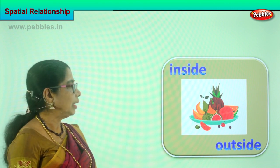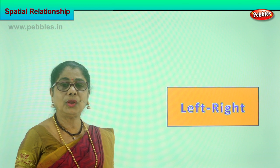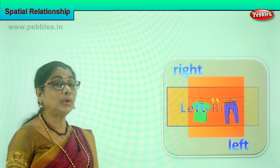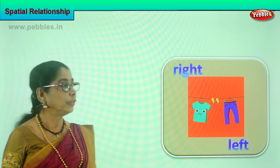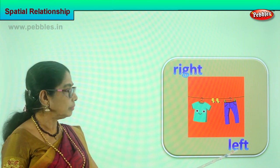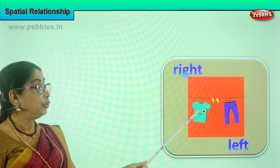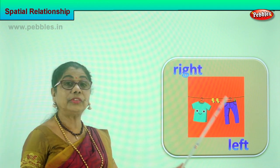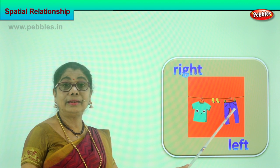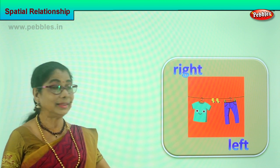Let's look at another: left and right. Let's look at the picture and learn for ourselves. What do you have on the left side? You have a pant hanging. On the right side you have a shirt hanging. The pant is on the left side. The shirt is hanging on the right side. Right, left. Show me your right hand. Right, left.